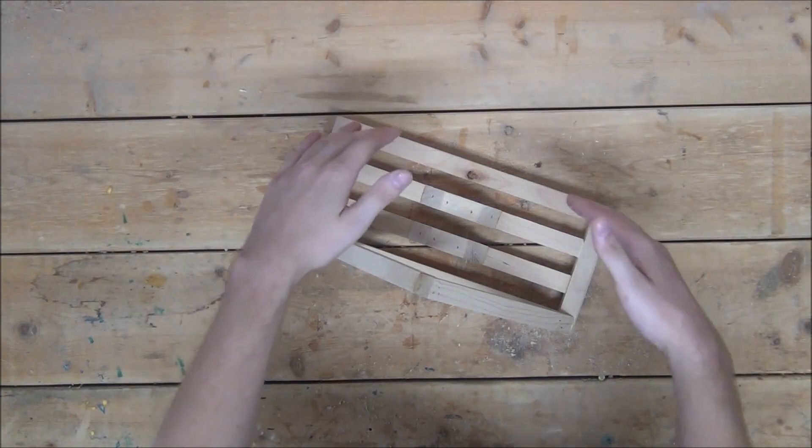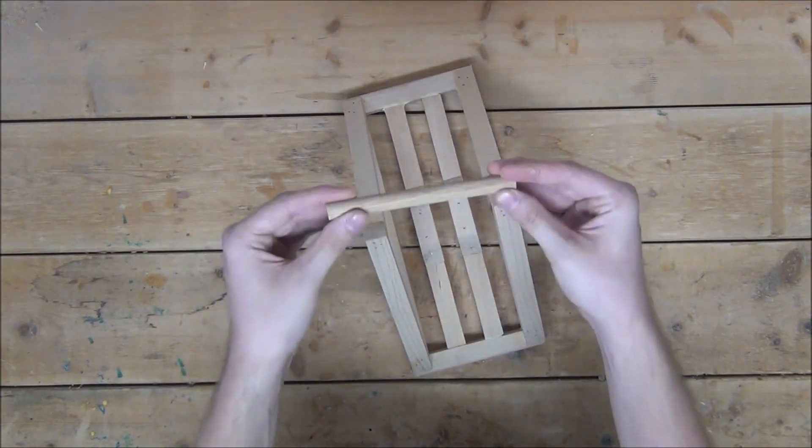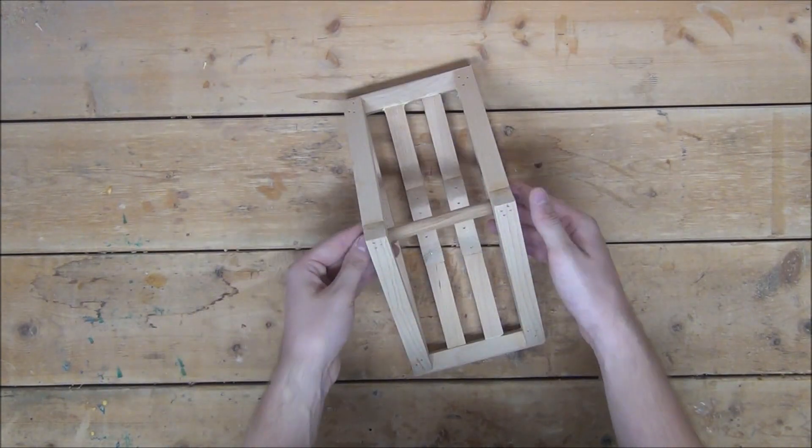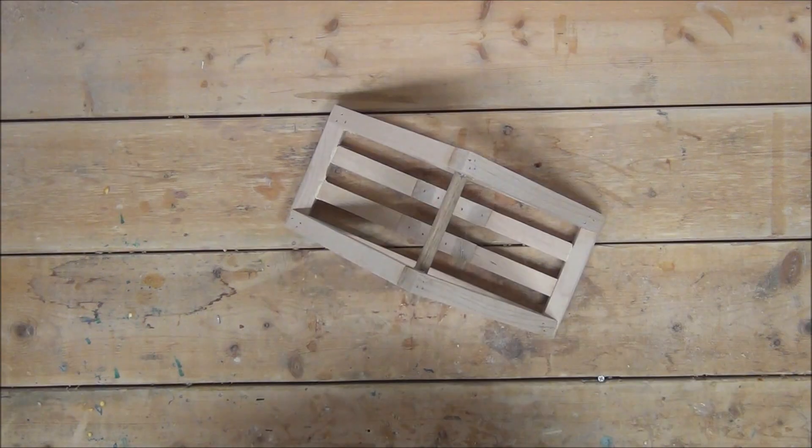Now repeat the process for the other side. Next, I'm going to take this half-inch dowel and glue and nail it into the bottom crevice of the arms we just mounted.